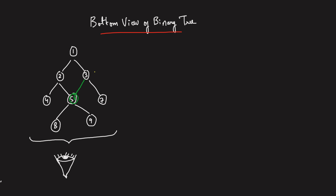Let's assume this is the binary tree given to you. Bottom view, as the name suggests, means you have to look from the bottom and imagine this tree in a 1D paper. The first node you'll see from left to right is 4. From here, you'll just see 8 because 8 is hiding 2. And from here, you can see two nodes — from node 2 there is node 5, and from node 3 there is node 6. When two nodes overlap, always take the right one, which is 6.